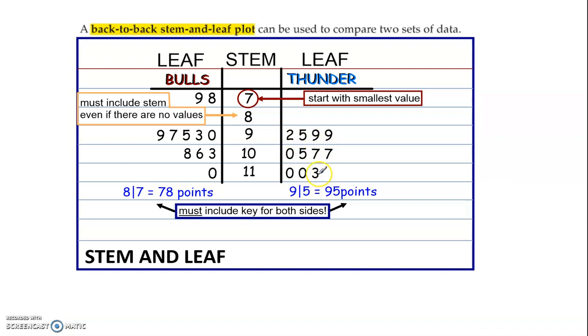Right, they have the highest score. And this key, again, tells us how to read this. Nine slash five means 95 points. Now, 11 slash zero would be 110 points. So there you can see why I said only the least place value goes in the leaves. Everything else goes in the stem.